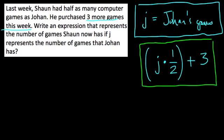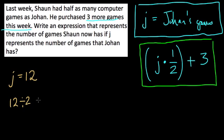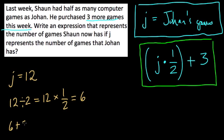Here's an expression you could use to figure out the number of games that Sean currently has. And if you're not feeling comfortable about this, pick a number of games for Johan to have. Let's say Johan has 12 games. Last week, Sean has half as many games as Johan, so Sean would have 12 divided by 2 — or 12 times a half — which equals 6. So Sean had 6 games, but then he purchased 3 more, so Sean would have 6 plus 3, and he would have 9 games.